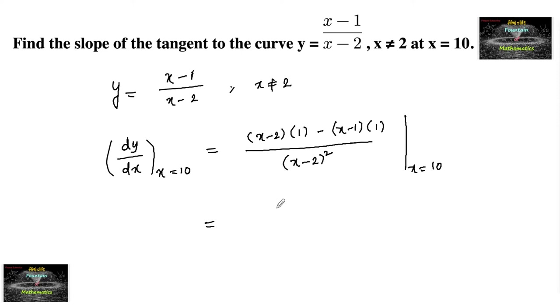Which equals x minus 2 minus x plus 1 over x minus 2 whole square, which equals minus 1 over x minus 2 whole square. Let us substitute x equals 10: minus 1 over 10 minus 2 whole square, that is minus 1 over 8 squared is 64.